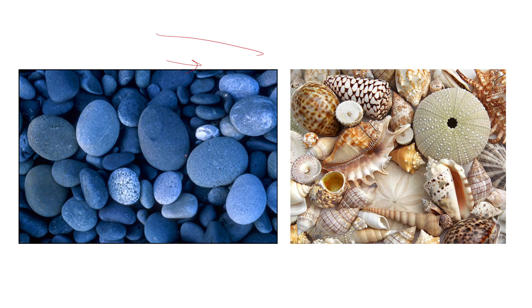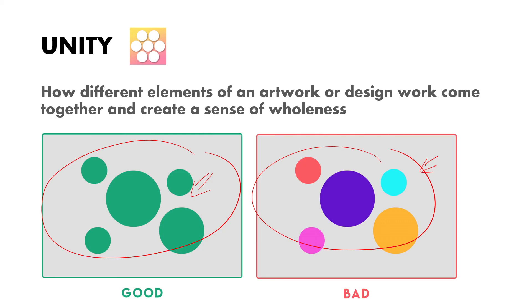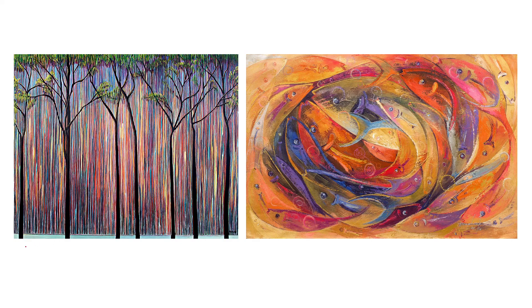Next is unity. Unity is how different elements of an artwork or design work together to create a sense of wholeness. Comparing two examples: one feels united because elements are consistent, while the other does not feel united because shapes and colors keep changing, making each element feel like a separate unit. In unity examples, the whole image feels like one unit — although elements may be different, the whole gives a feeling of unification.